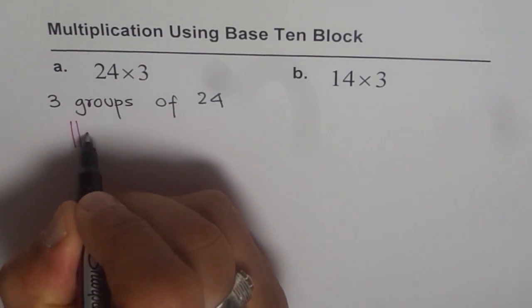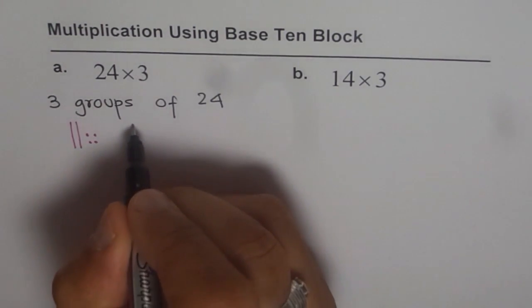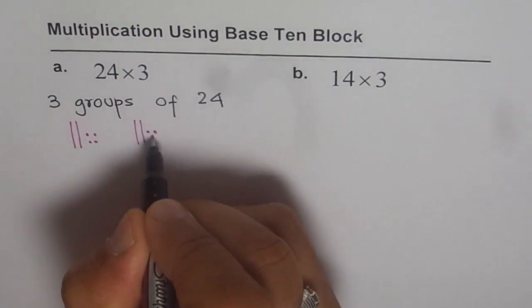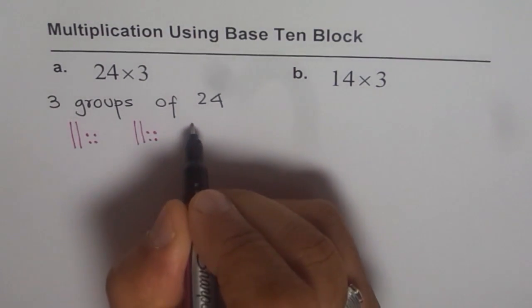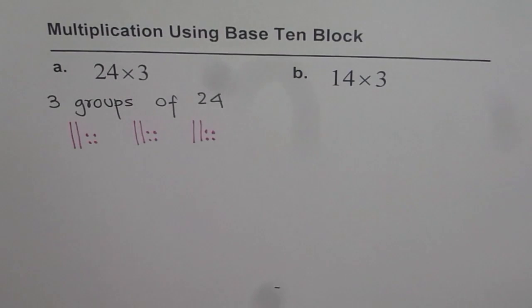2 tens and 4 ones. Okay, that is 24. Group number 1. One more. Group number 2. And here is my third and final group to make it 24 times 3.